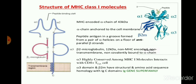The MHC-encoded alpha chain is about 43 kilodaltons and it is anchored to the cell membrane. In this figure you can see the transmembrane region of the T cell. Basically it contains three alpha structures — alpha 1, alpha 2, alpha 3 — and beta-2 microglobulin. Alpha 1 and alpha 2 form the peptide binding cleft, which is essential for the binding of antigen to the MHC molecules for recognition.